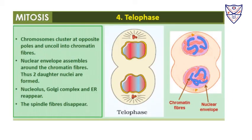During telophase, chromosomes cluster at opposite poles and uncoil into chromatin fibers. The nuclear envelope assembles around the two chromatin masses, forming two daughter nuclei. The nucleolus, Golgi complex, and endoplasmic reticulum reappear, while the spindle fibers disappear as they have completed their function.